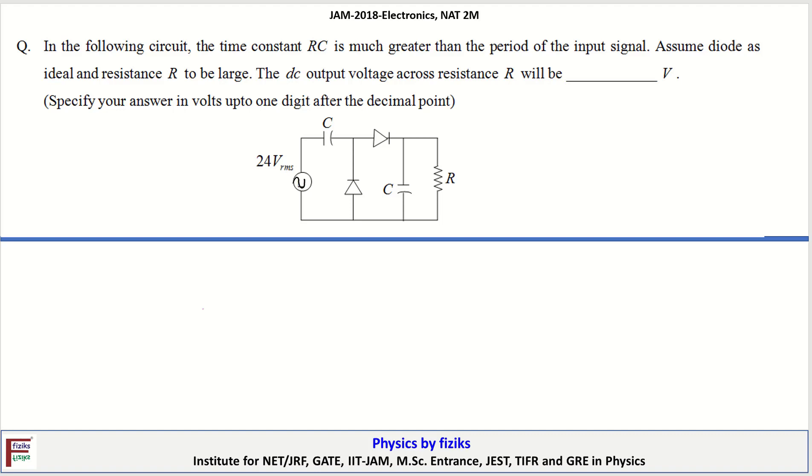In the following circuit, the time constant RC is much greater than the period of the input signal. Assume diode is ideal and resistance R to be very large. We have to find the DC output voltage across resistance R.